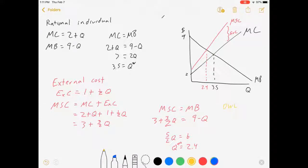So our deadweight loss happens whenever marginal social cost is greater than marginal benefits. And it looks like this. We would have been best at 2.4, and everything after that is costing us more than it benefits us.